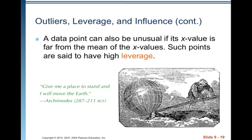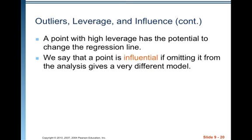A data point can be unusual if its x value is far from the mean of x — such points are said to have high leverage, like Archimedes' idea of having a place to stand to move the earth. If a value is far enough from the mean of the x values, it can move the whole regression. It draws the regression to itself; if it doesn't follow the general pattern, it uses its influence and is called an influential point. If it falls in the pattern of the rest, it doesn't use its influence because everyone else is in line with it.